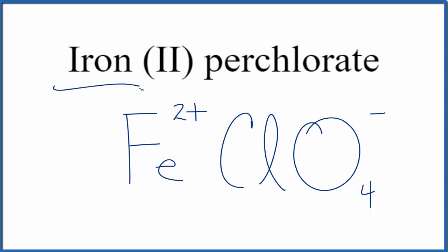So iron is a metal, and perchlorate is a group of non-metals. This is an ionic compound, so the charges need to balance.